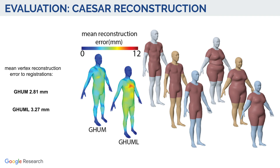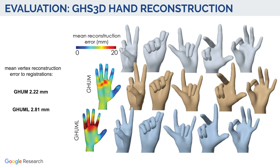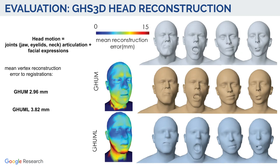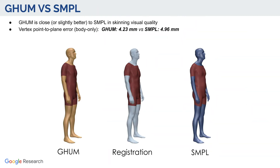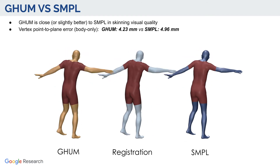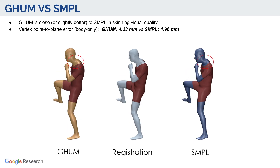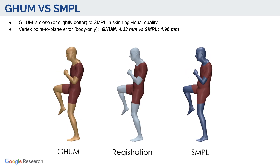We evaluate GAM and GAMLight on our testing data. Both models produce good reconstructions and generalize well to novel shapes and poses. Notice that GAM preserves more detail and the illustrated head motion includes both joint articulations and nonlinear facial expressions. We also compare our model with SMPL-X, an existing state-of-the-art 3D body model, and achieve lower reconstruction error and produce better visual quality in skinning.